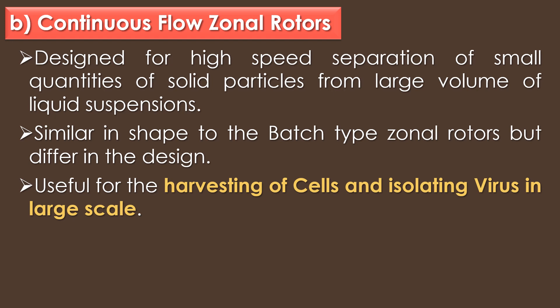The second type of zonal rotor is the continuous flow zonal rotor. Continuous flow zonal rotors are designed for high speed separation of small quantities of solid particles from large volumes of liquid suspensions. They are similar in shape to the batch type zonal rotors but differ in design. They are useful for the harvesting of cells and isolating viruses on a large scale.